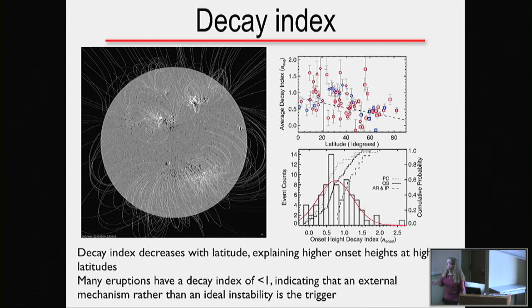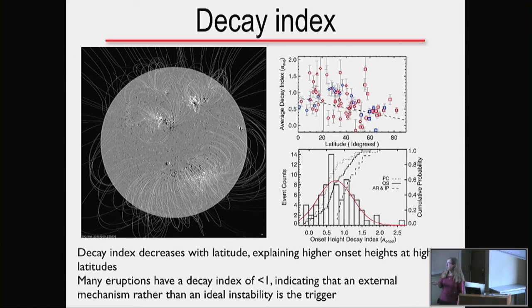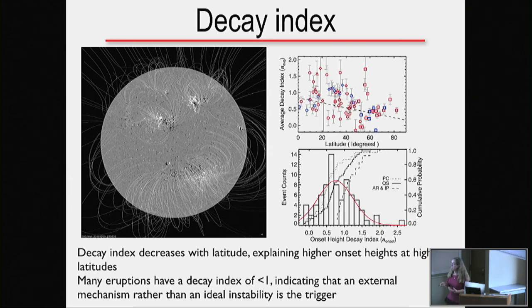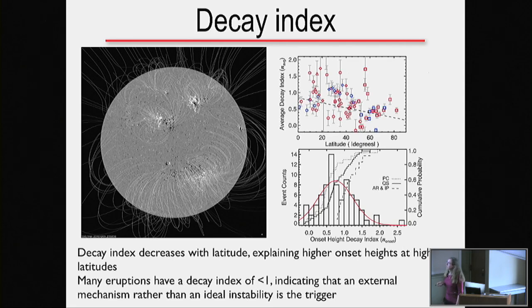We also looked at the decay index — a measure of how fast the magnetic field falls off as a function of height — to see if filaments in different locations showed differences. Patrick mostly found that the decay index decreases with latitude, which explains the higher onset heights. Many eruptions have a decay index of less than one; in the ideal MHD case, values of one or two are needed for eruption, suggesting an external trigger mechanism rather than an ideal instability in those cases.